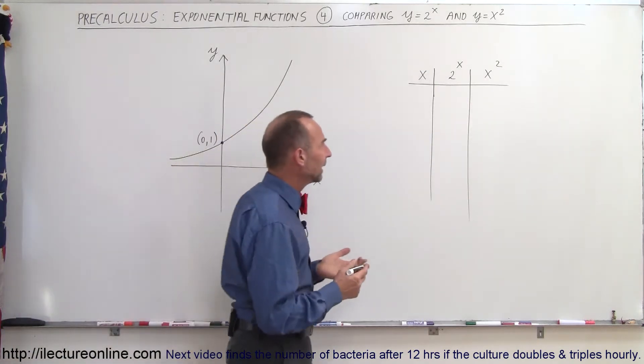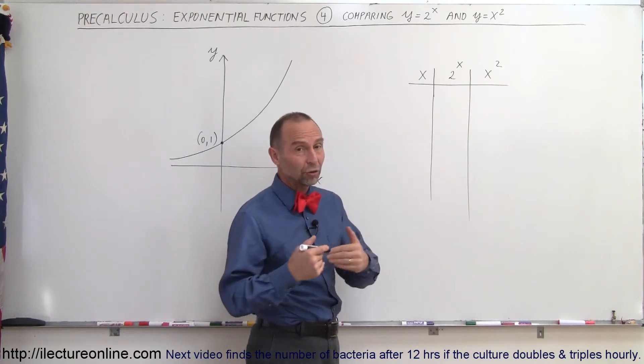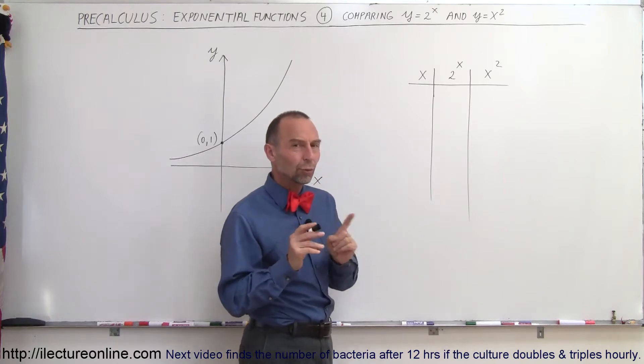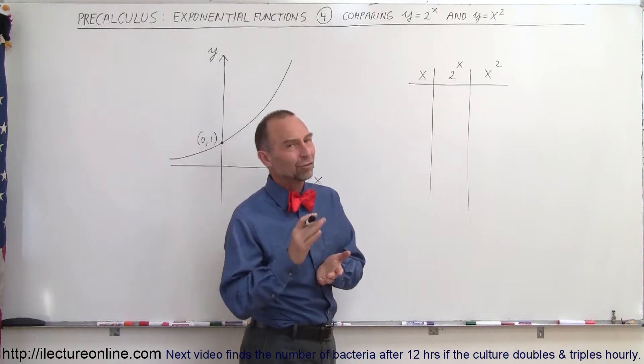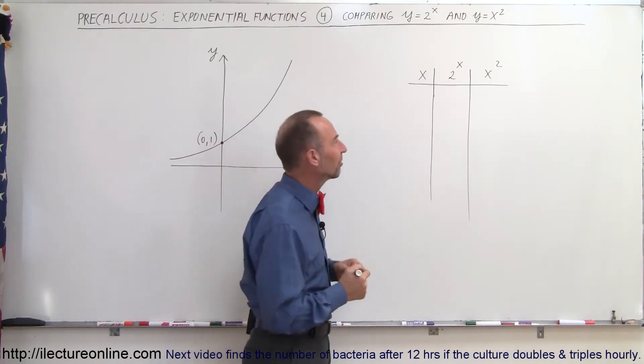First of all, when we plug in small values for x, there's not a lot of difference between the two functions as far as what the y value is equal to. But then as x becomes bigger, one of the two functions begins to grow much faster than the other. And yes, you probably already guessed it, it's the exponential function that grows faster. So let's see what happens here.